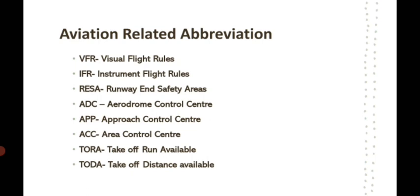RESA is Runway End Safety Area. If an aircraft is taking off and for some reason has to abort but cannot stop before the end of the runway, it will go beyond the runway's end. Beyond that point there is a soft ground area — soft soil — where the aircraft will stop. This area is made soft to create minimum, least possible damage to the aircraft.